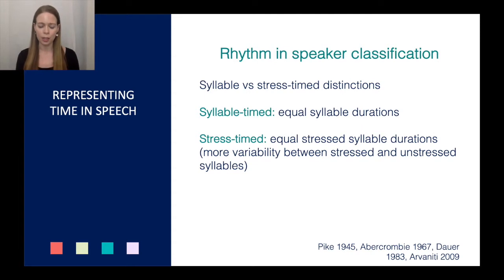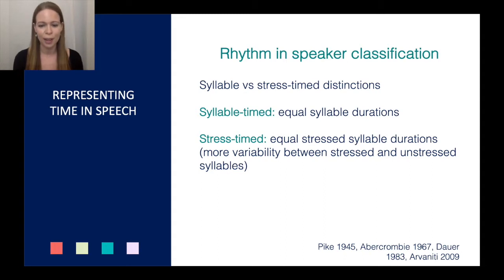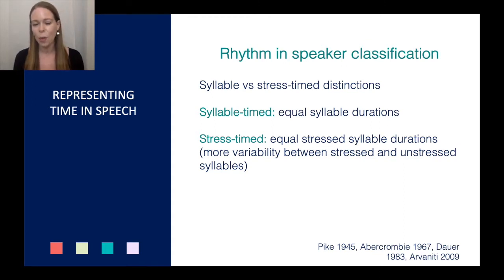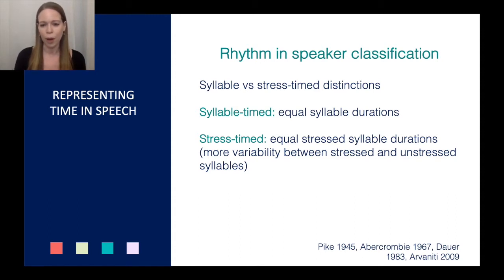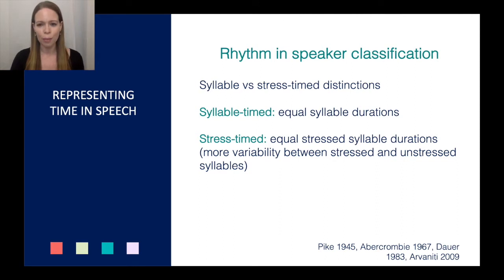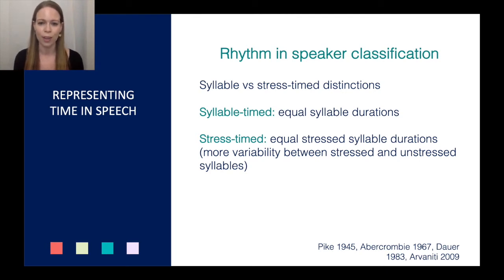Global temporal representations are frequently used to classify languages and dialects as either syllable-timed or stress-timed. Syllable-timed languages have relatively equal syllable durations, whereas stress-timed languages have relatively equal durations across stressed syllables but more variability between stressed and unstressed syllables. While this distinction might be a good starting point for discussing rhythm, it can also be problematic, as most languages don't fit nicely into one type or the other — this distinction on its own is just a bit too coarse.